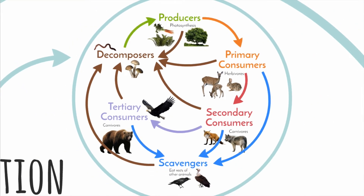This is a diagram that represents how living things feed on other living things in an ecosystem. It is called a food chain.